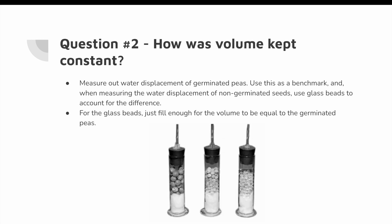The second question is: how did we keep the volume constant? We first measured out the water displacement of the germinated peas and used this as a benchmark. When measuring the water displacement of the non-germinated seeds, we used glass beads to fill in and account for the difference — just enough glass beads to achieve the same water displacement. Here is a model of our test tubes: germinated, non-germinated with glass beads, and the glass beads alone.